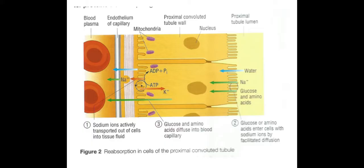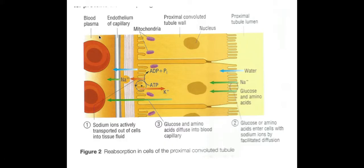This process looks complicated but is quite easy when you break it down. On the left hand side you can see the capillaries — this is the blood supply that lines and surrounds the nephrons. On the right hand side is the lumen — inside the proximal convoluted tubule. The cells shown here are the cuboidal cells that line the proximal convoluted tubule wall, making up that wall.